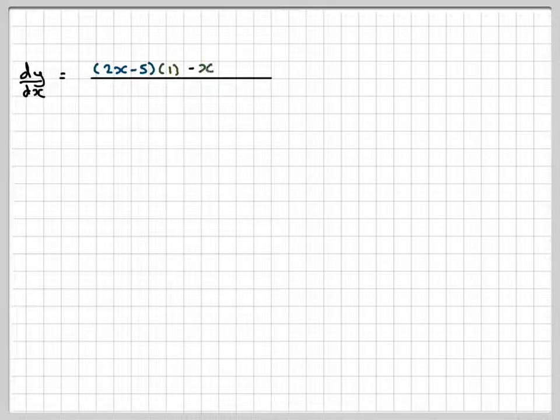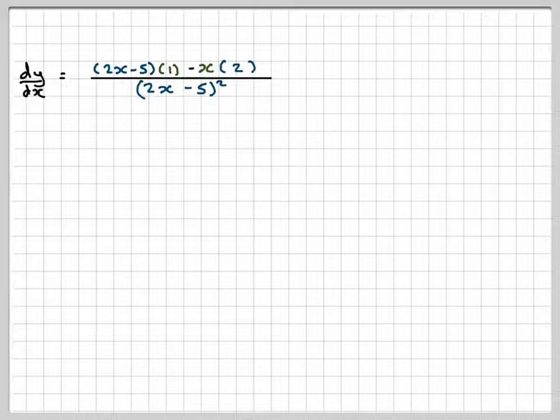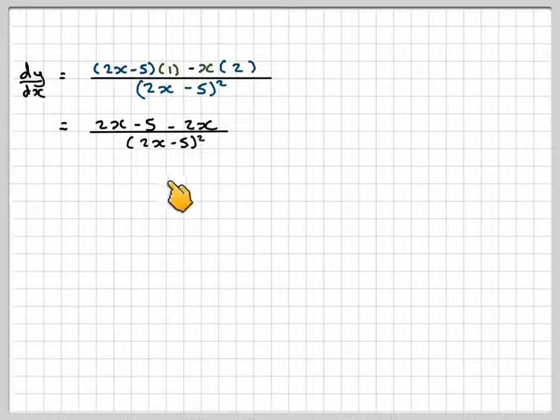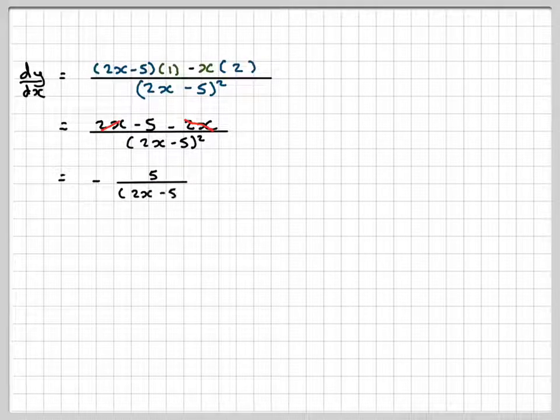...simplifying the numerator, we're going to have 2x minus 5 minus 2x over 2x minus 5 squared. So we're just left with minus 5 over 2x minus 5 all squared.